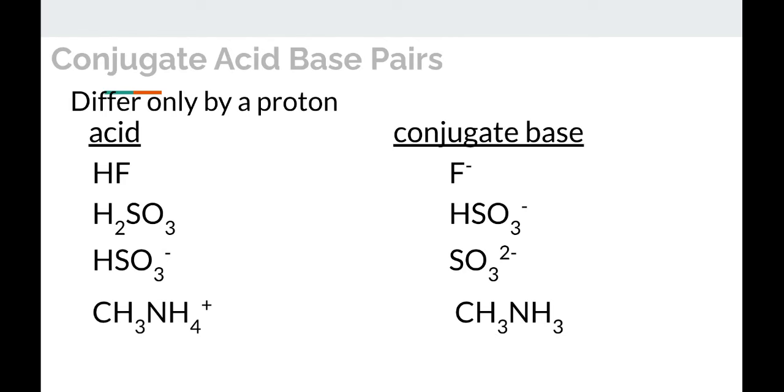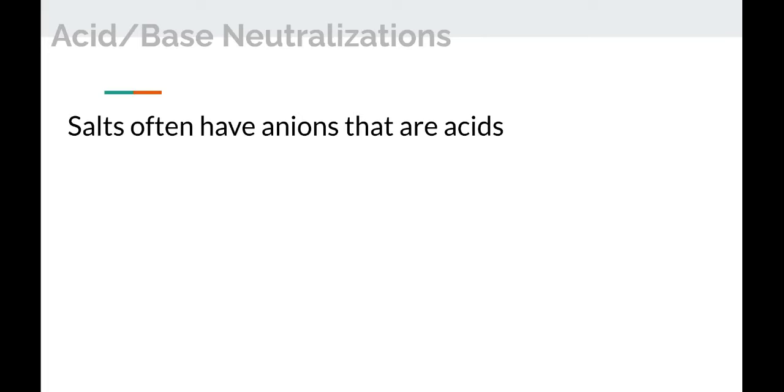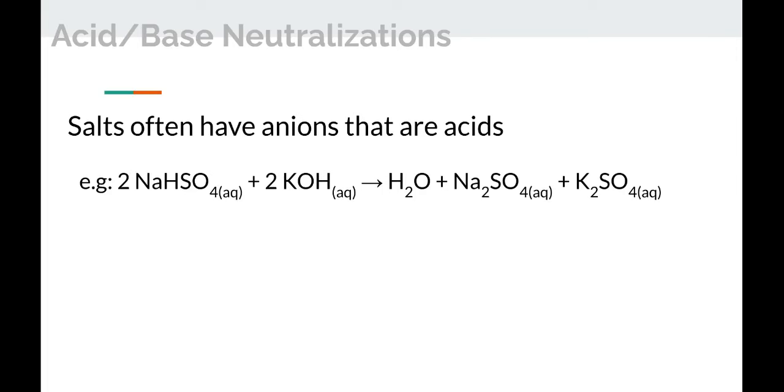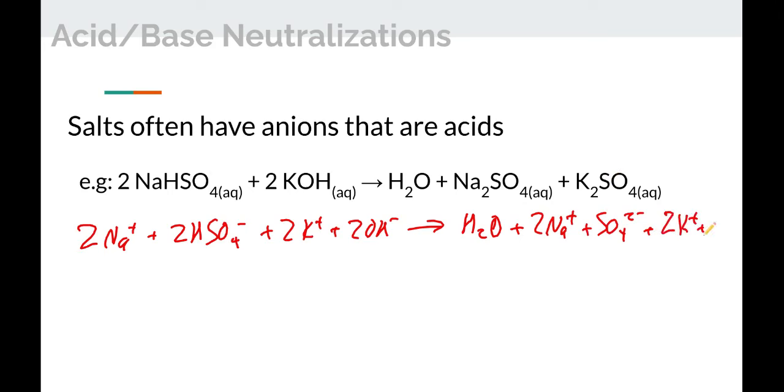There are some things called acid salts. So there are salts that have anions that are themselves actually acids. We can see this from an example. Let's do the ionic equation for this. 2Na+ plus 2HSO4-, plus 2K+ plus 2OH-, makes water. We can split this one up: 2Na+ plus SO4 2-, and we can split this one up too: 2K+ and SO4 2-.